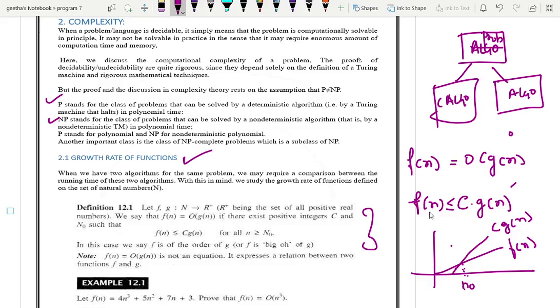That is represented here, f of n is less than c into g of n after n naught, n greater than equal to n naught. This is a big O notation and similarly other notations are there.